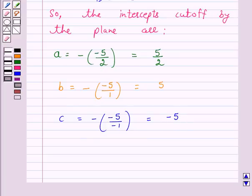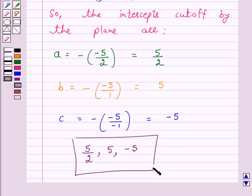Hence the intercepts cut off by the plane 2x plus y minus z equals 5 are 5 by 2, 5, and minus 5. So, this is the answer for the above question.